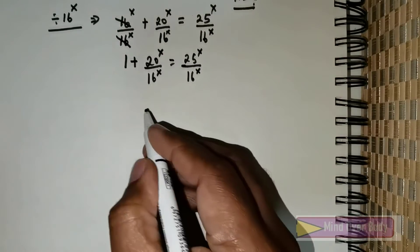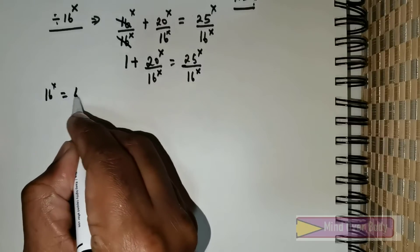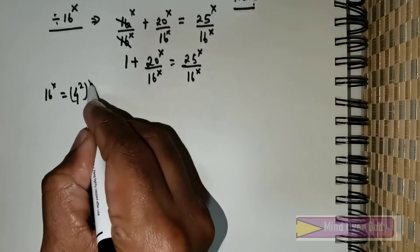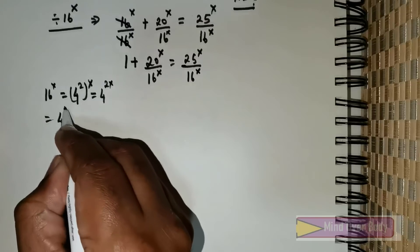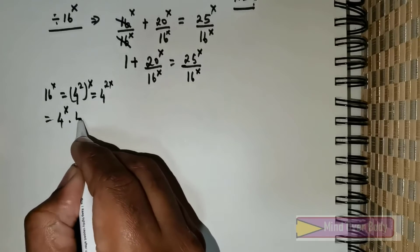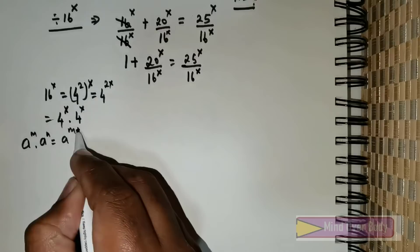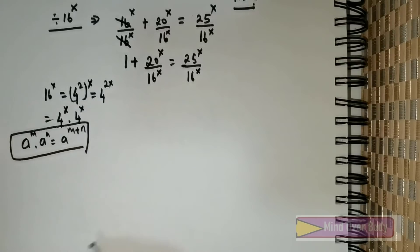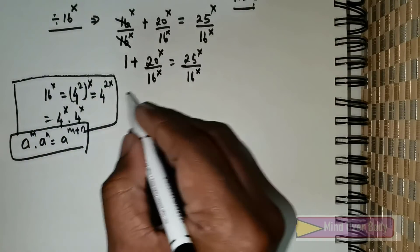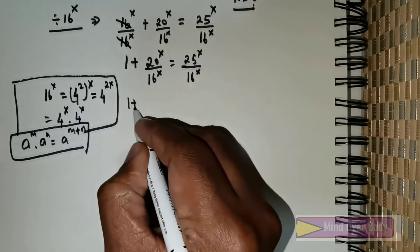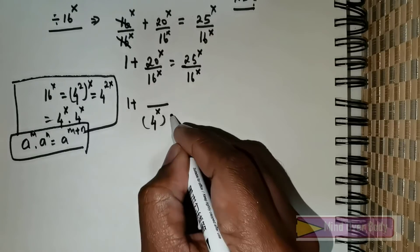Now, 16 raised to the power x can be rewritten as 4 squared raised to the power x, which is 4 raised to the power 2x. This can be further reduced as 4^x times 4^x, using the rule that a^m times a^n equals a^(m+n). So I am rewriting 16^x as 4^x multiplied by 4^x.